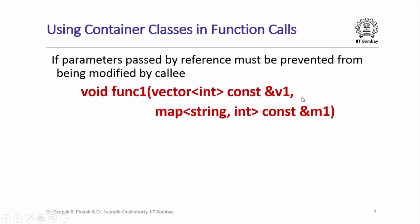If you pass parameters by reference, there is a certain risk that the callee function might end up modifying the parameters you passed by reference, even though you did not intend them to be modified. If you really want to prevent the callee function from modifying the parameters, you can use the const keyword in the declarations of the parameters. Once you do that, if the body of func1 tries to modify either v1 or m1, the compiler will complain and report an error.